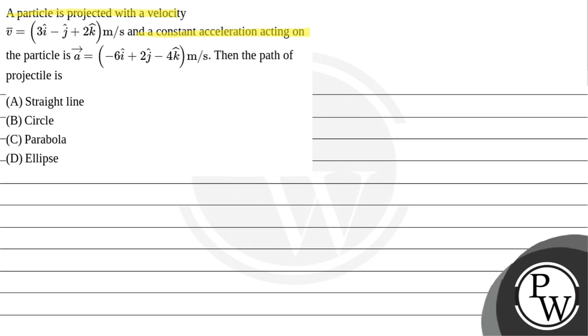meter per second. And a constant acceleration acting on the particle is a vector equals to minus 6i cap plus 2j cap minus 4k cap meter per second square. Then the path of the projectile will be